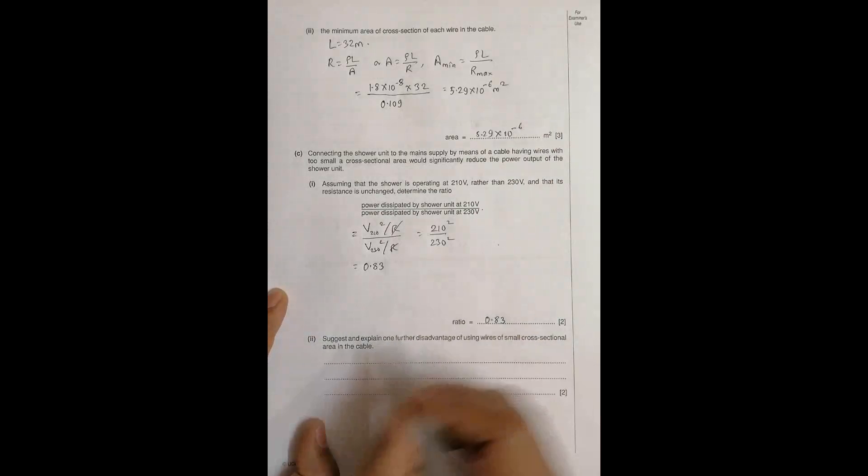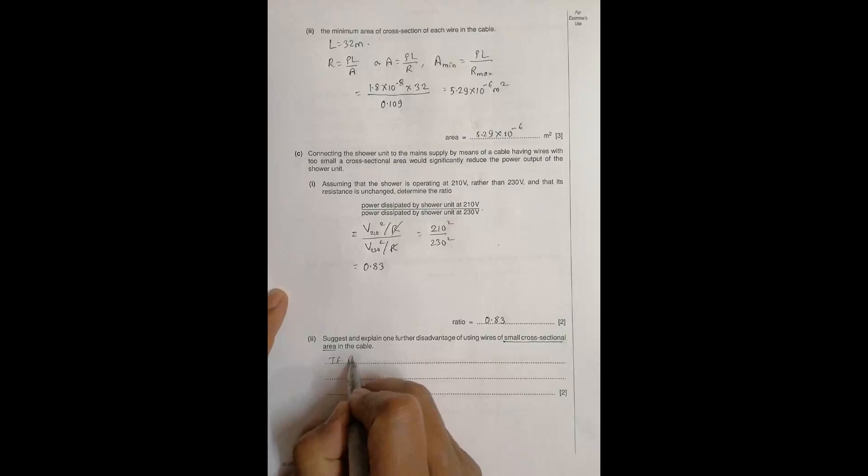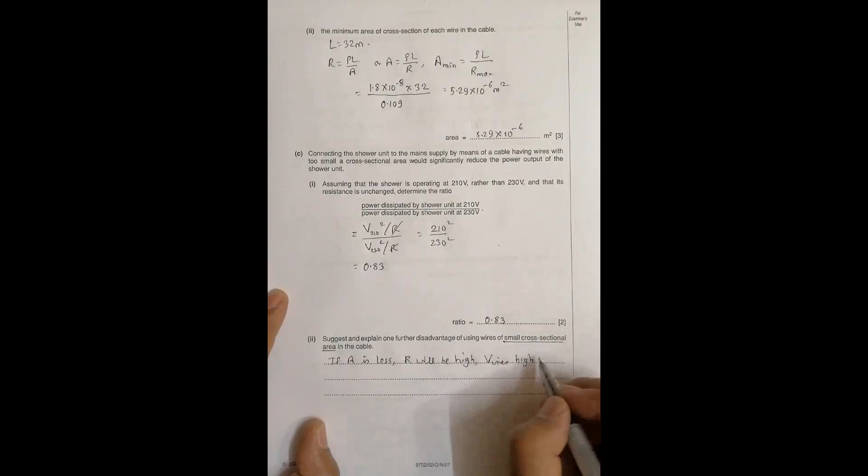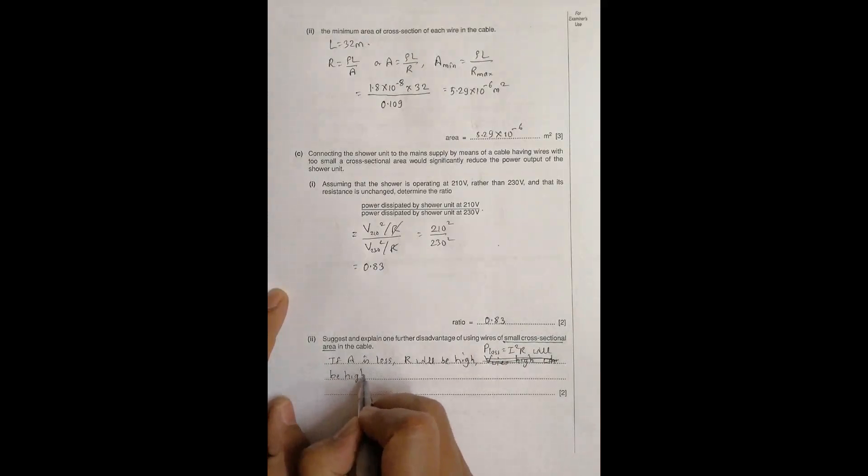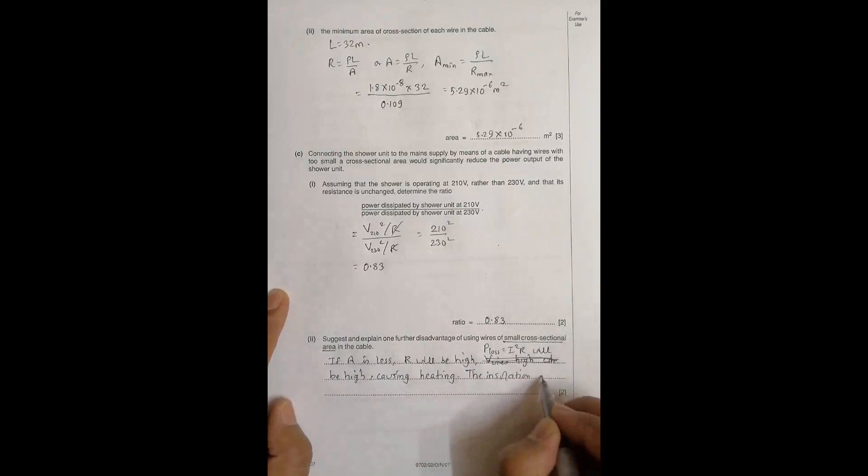Because if we have got small cross sectional area, if A is less, R will be high. So the PD across the wires will be high, or I can say simply if R is high, the power loss equal to I squared into R will be high. This causes heating, causing heating, and because of this heating the insulation might break down, insulation melts, even the wire can melt.